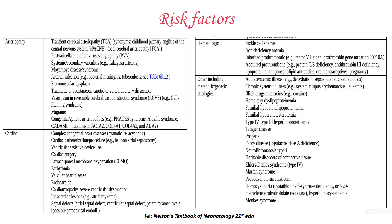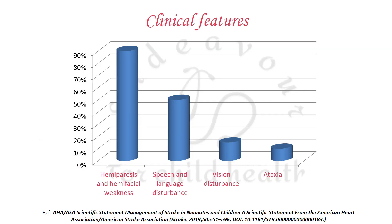The risk factors for childhood stroke are numerous. Common ones include arteriopathy — for example, transient cerebral arteriopathy, post-varicella arteriopathy, various vasculitides, and moyamoya disease or syndrome. Cardiac causes include complex congenital heart disease, cardiac surgeries, and arrhythmias. Hematological causes include sickle cell anemia, iron deficiency anemia, and inherited and acquired prothrombotic states.